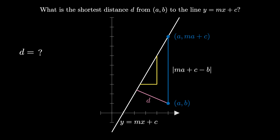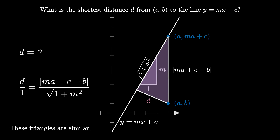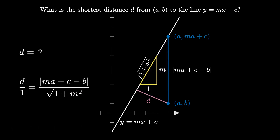We can now draw another triangle using the given line. This triangle has a base of length 1 and a height of length m, since that's the slope of the line. Using the Pythagorean theorem, we can determine that the hypotenuse of this triangle is the square root of 1 plus m squared. Because both triangles are right-angled and share a common angle, we conclude they are similar. This similarity implies that d over 1 is equal to the absolute value of ma plus c minus b, all over the square root of 1 plus m squared.